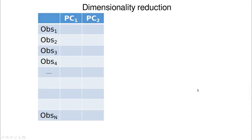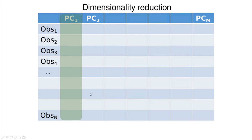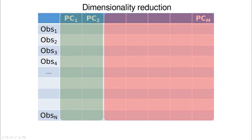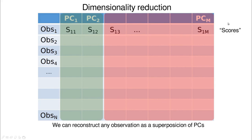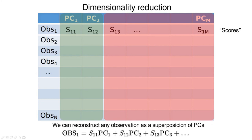This is why PCA is amazing. In summary, we started with two variables and ended with two principal components, then dropped one because the variance was so large in the first direction that the second was negligible. In general, with n observations and n variables, the idea is to find a projection of the data to achieve the minimum number of principal components that captures all the variance. We call the coefficients in this projection 'scores' — we can reconstruct any observation as a superposition of principal components, and compression comes from safely dropping the less important ones.